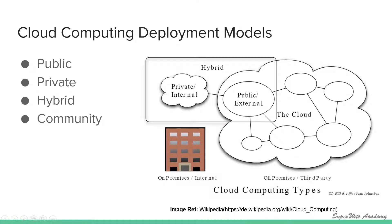NIST has also defined four deployment models, categorized by the location of deployment: public, private, hybrid, and community. A public cloud is available for everyone — anyone can opt for cloud services from organizations selling them over the internet and will be billed per their usage. A private cloud is operated exclusively for an organization, implemented mostly on the organization's private premises, and accessible only to members of that organization.